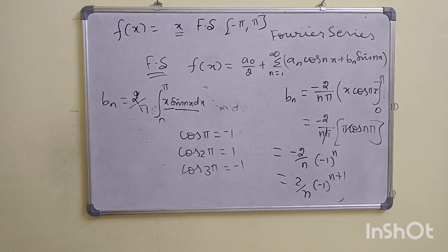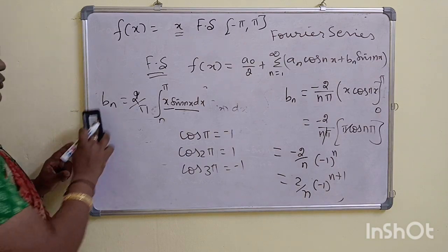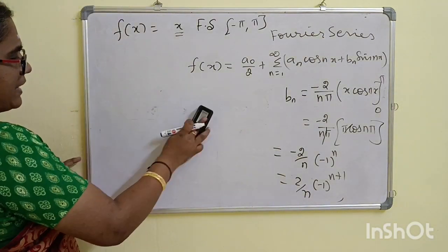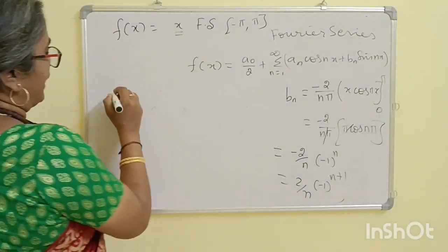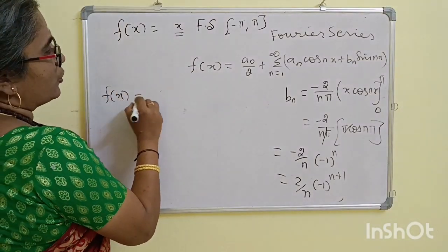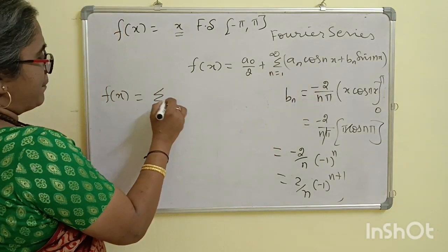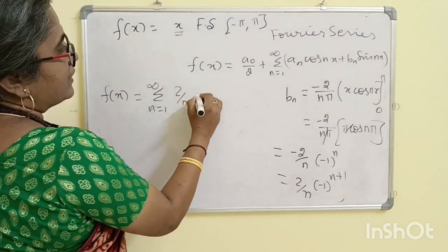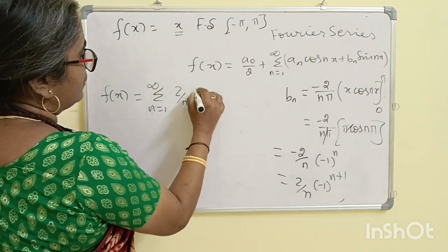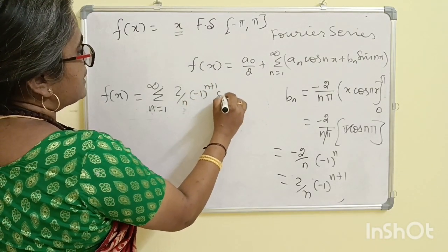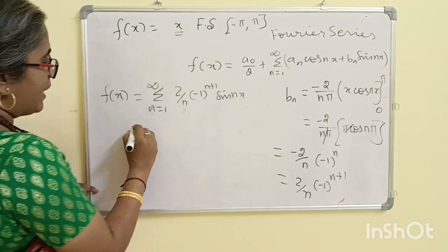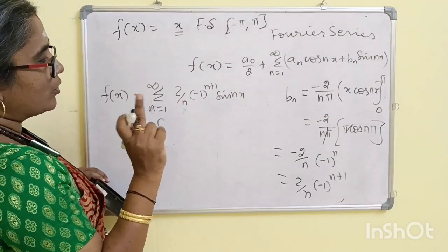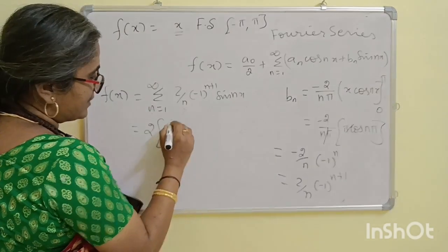That is the value. If we know that Bn = (-1)^(n+1), then f(x) = summation n varies from 1 to infinity of (2/n)·(-1)^(n+1)·sin(nx).